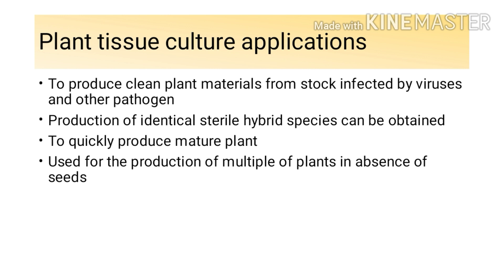The next application of plant tissue culture is that it is useful for the production of clean plant material from stock infected by viruses and other pathogens. Sometimes you have a plant species that is infected with a viral factor or pathogen attack. In this case, if you want to save your species, you choose the plants that are healthy and not affected, extract their tissue, perform plant tissue culture, and you will get a clean species which will not be affected by the virus or pathogen.